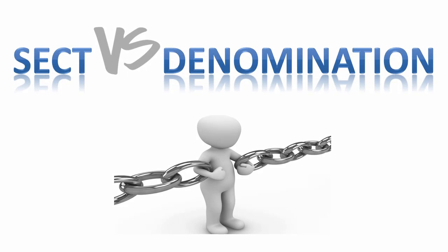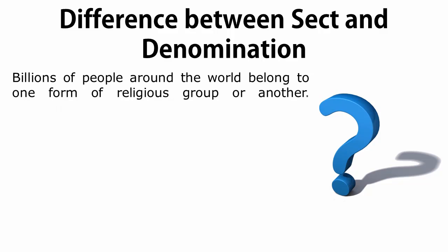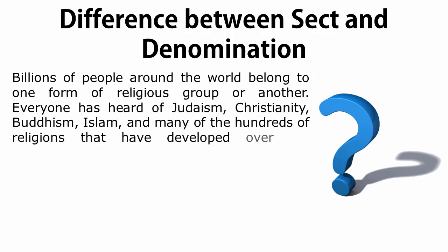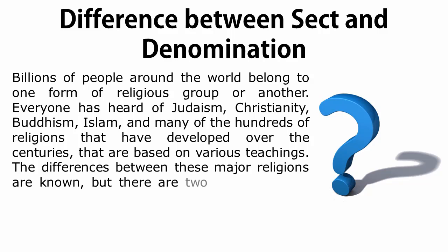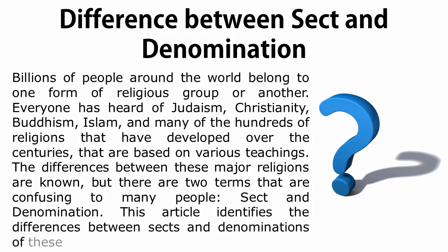Difference between sect and denomination. Billions of people around the world belong to one form of religious group or another. Everyone has heard of Judaism, Christianity, Buddhism, Islam, and many of the hundreds of religions that have developed over the centuries, based on various teachings. The differences between these major religions are known, but there are two terms that are confusing to many people: sect and denomination. This article identifies the differences between sects and denominations of these various religious groups.